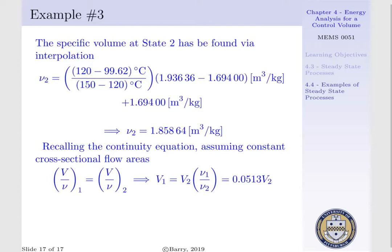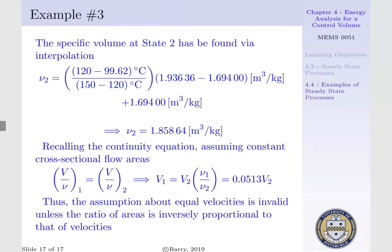That is to say, for a constant cross-sectional area, our assumption that our densities at our inlet and exit is incorrect. That is, our formulation for the conservation of energy for this particular device is invalid, for our densities are not equivalent. The only way for this to be valid is if our ratio of areas is inversely proportional to that of our velocities.